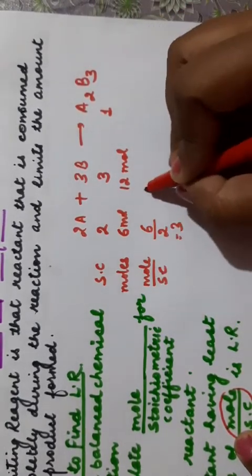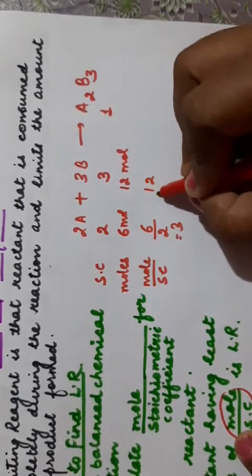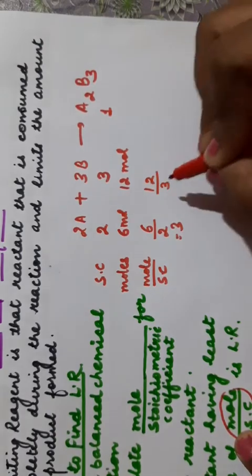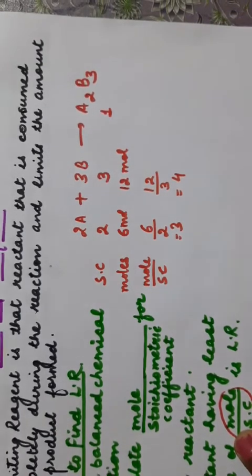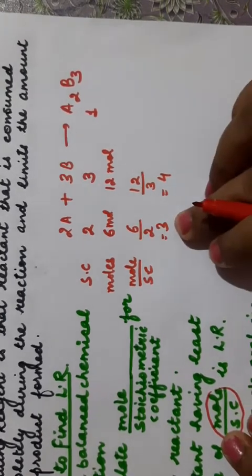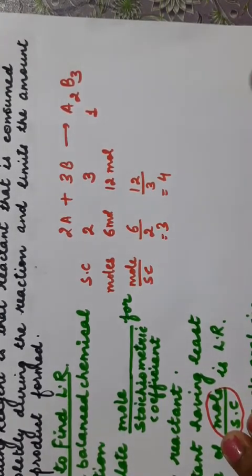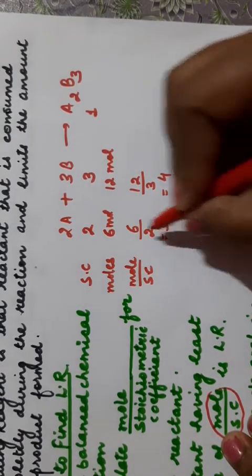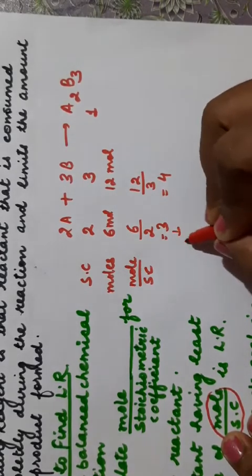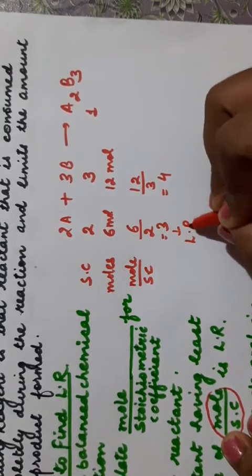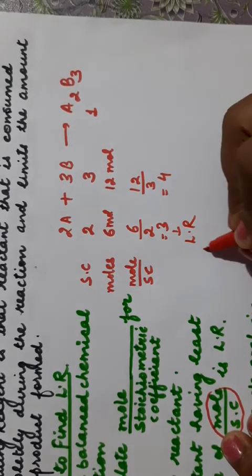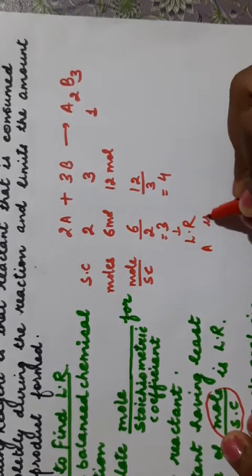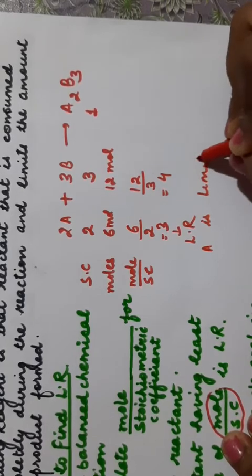The reactant having the least value of this ratio will be the limiting reagent. A has a ratio of 3 and B has a ratio of 4. So A has the lesser value and it will be the limiting reagent. A is the limiting reagent.